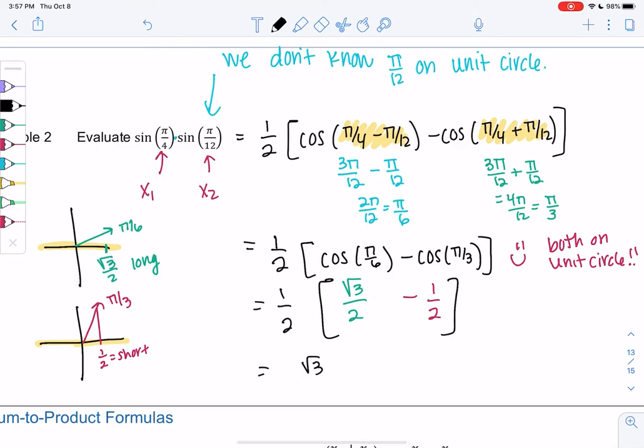So we get √3/4 minus 1/4. And maybe I'll just make it one fraction. Square root of 3 minus 1 all over 4. And that's considered our exact answer. Exact answers are better. Rounding is bad.